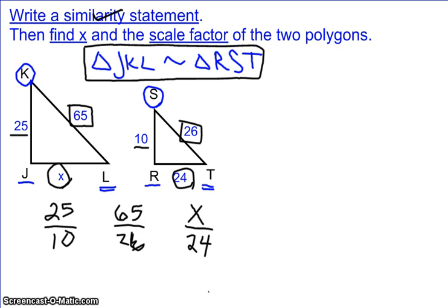So let's simplify. 25 divided by 10, I can divide out a 5 from the top and the bottom to give me 5 over 2. 65 over 26, I can divide 13 by the top and the bottom. That also gives me 5 over 2.